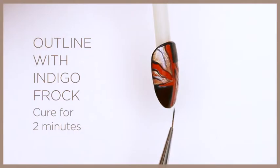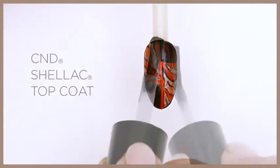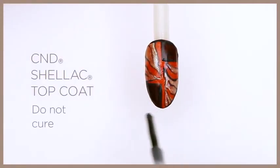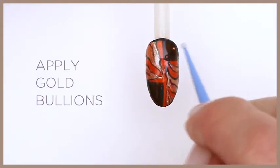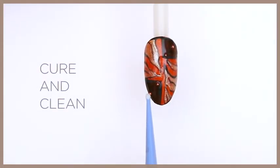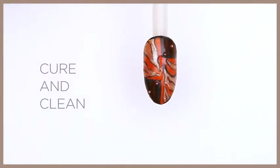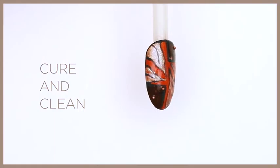Cure for two minutes. Apply a thin layer of Shellac top coat but do not cure. Place rose gold bullions diagonally across the nail. Cure for a final two minutes and clean with 99% IPA.